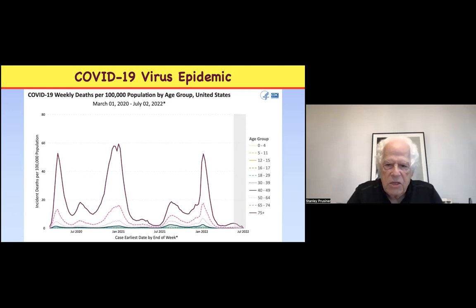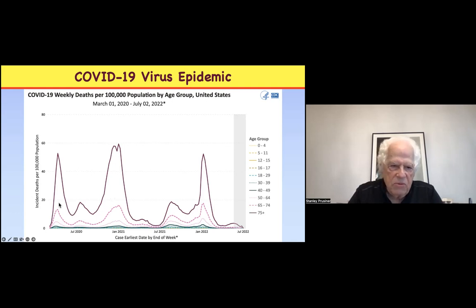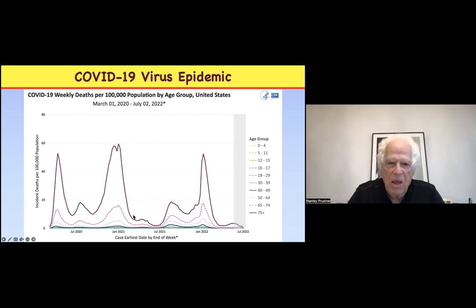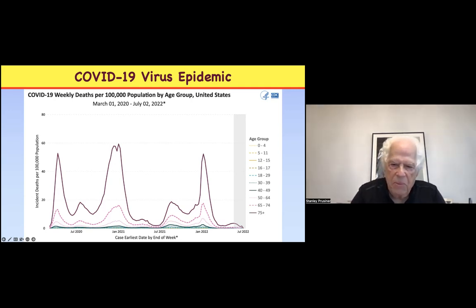What you see here is stratification by age. The people who are over 75 represent the dark purple line, and you see these enormous numbers, then it goes down, back up, and down again. These fluctuations are linked to vaccinations, so we're getting some control. But out to the right, this is going to be going up and up until we figure out a way to stop the omicron EA5 variant, which is really spreading around the world.